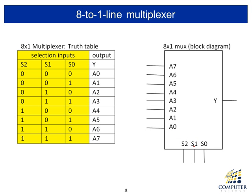Here is the block diagram of an eight-by-one multiplexer. Since we have eight inputs, we need three selection inputs — two-to-the-three is eight. If the selection signal is zero-zero-zero, then the input labeled zero is directly connected to Y. If the selection input is zero-zero-one, then input one is directly connected to Y, and so on.